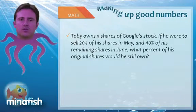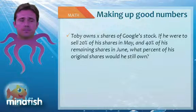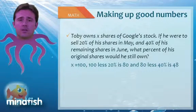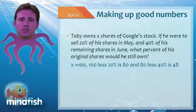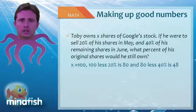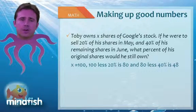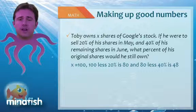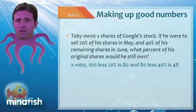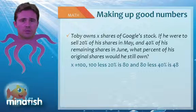So let's look at two more questions dealing with making up numbers. The first is a percent question. So we're going to start with the number 100. Toby owns X shares of Google stock. So let's say 100 shares. If he were to sell 20% of his shares in May, he would sell 20 shares. Now he has 80. Now if he sells 40% of his remaining shares, we have to do 40% of 80, which would be 32. So now he's gone from 80, and he still has 48 shares. So now our answer choice would be 48%. If the answer was in terms of X, we'd be plugging in our choice 100 to look for the number 48.